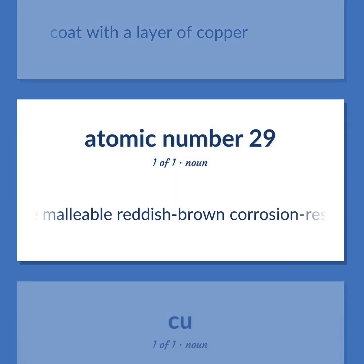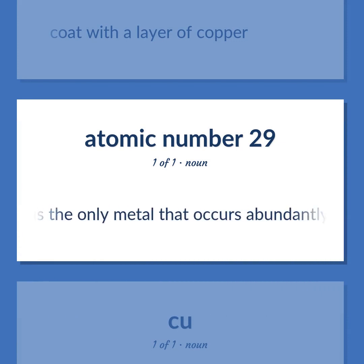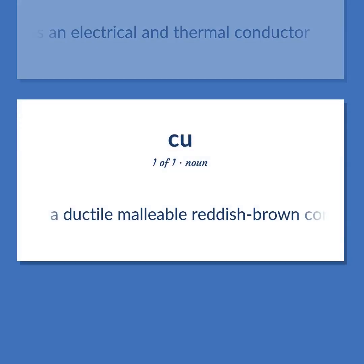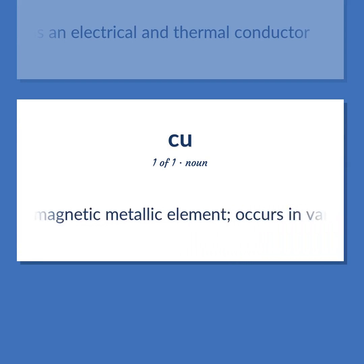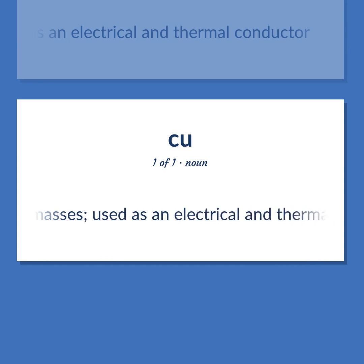A ductile-malleable reddish-brown corrosion-resistant diamagnetic metallic element. Occurs in various minerals but is the only metal that occurs abundantly in large masses. Used as an electrical and thermal conductor.